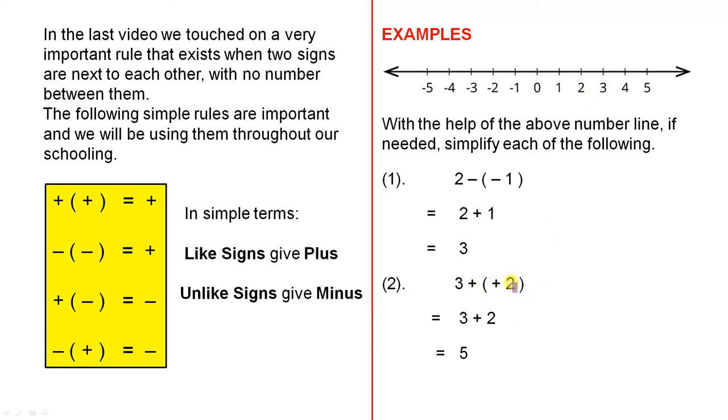3 plus plus 2, when you have two signs that are like, in other words they're two plus signs, they translate into a single plus sign, 3 plus 2 equals 5.